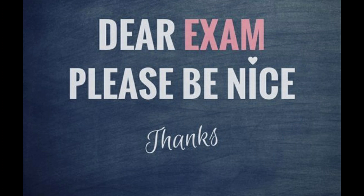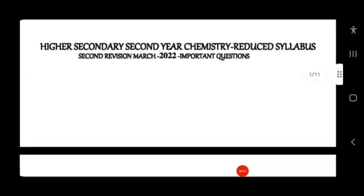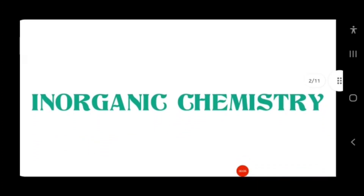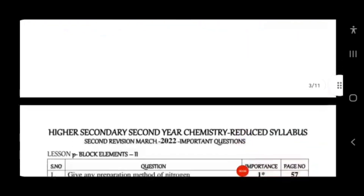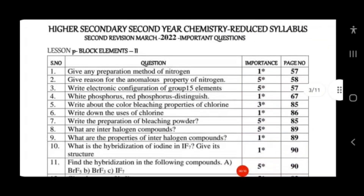Let's start about chemistry. In organic chemistry there are two lessons: Lesson 3 and Lesson 4. Lesson 3 is P-block elements.